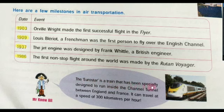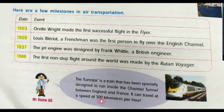The Eurostar is a train that has been specially designed to run inside the Channel Tunnel between England and France. Here is a picture of that train. It can travel at a speed of 300 kilometers per hour — very fast! Here is the end of both chapters. Your homework is to write both chapters in your exercise book and learn them by heart. Thank you.